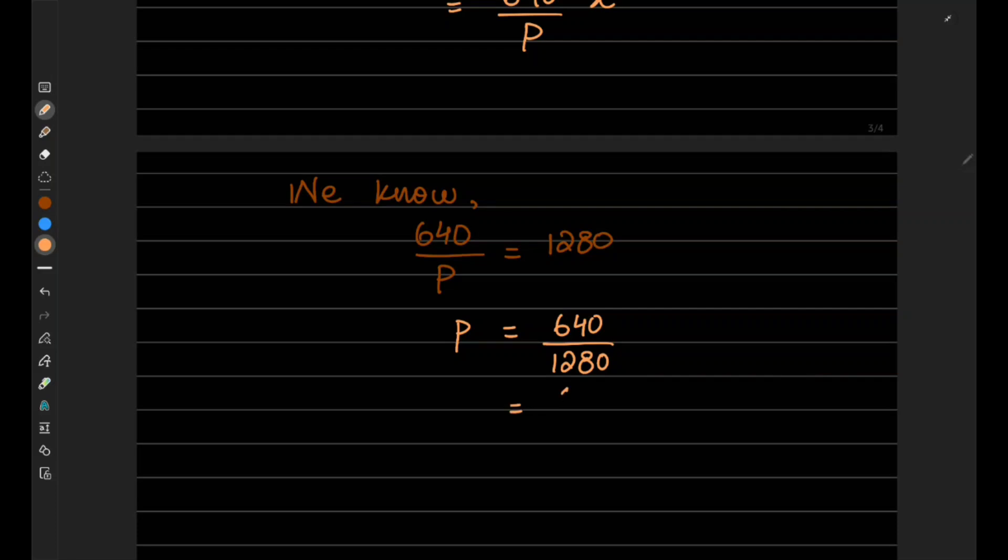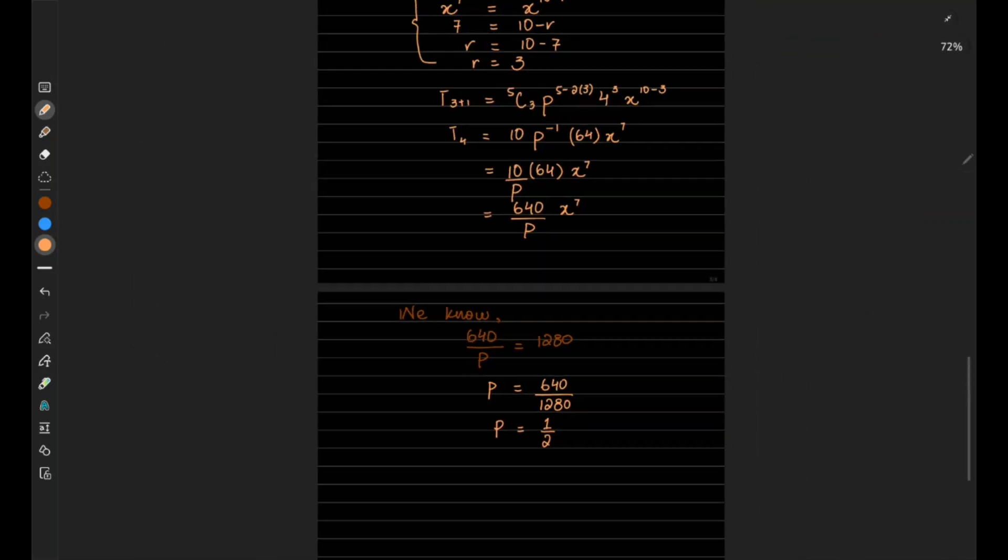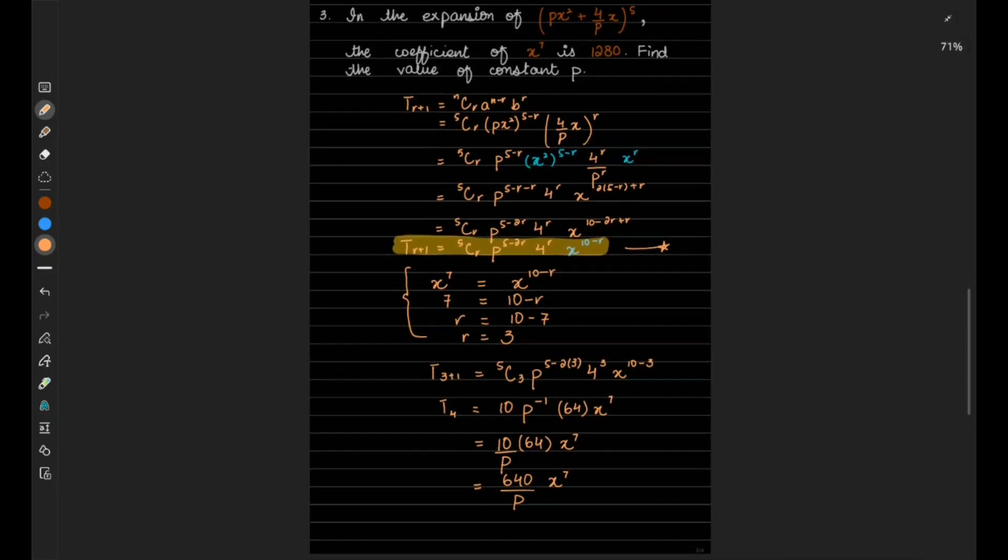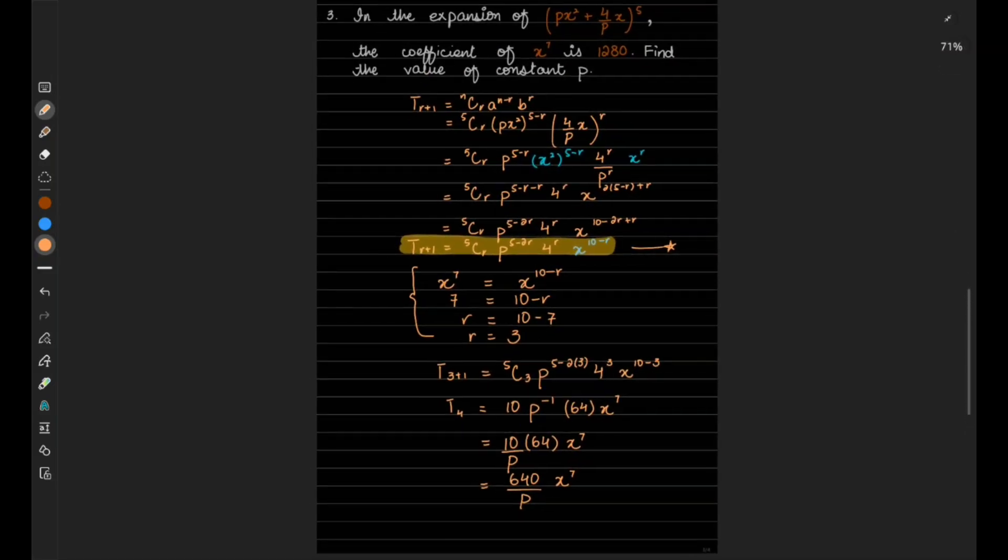So that gives you p value to be 1/2 or 0.5. There may be any error in this working because we don't have marking scheme right now, so you can check this.